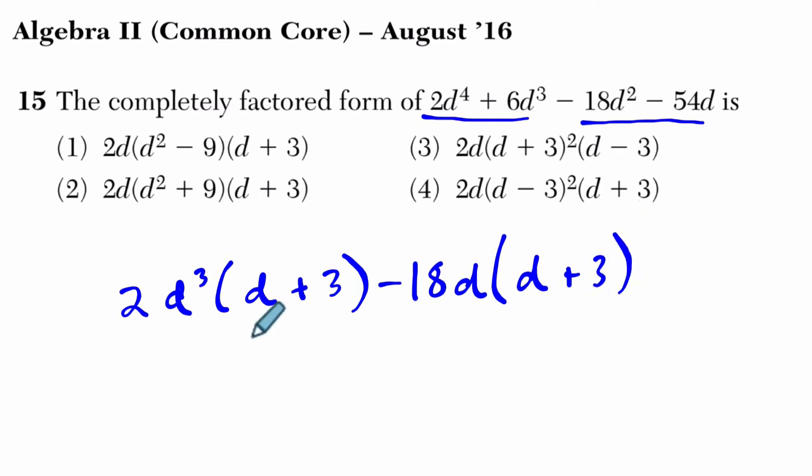So now we have two situations where there's a d plus 3. We can factor that out. So we factor out d plus 3, and what's left is 2d cubed and negative 18d.